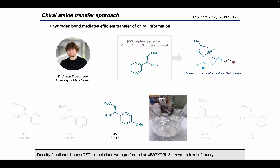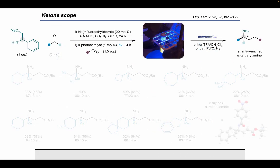Here you can see the formation of a borane reducing agent from sodium borohydride and iodine, used in the synthesis of the para-methoxy derivative. Having selected methoxy phenylglycinol as our chiral amine transfer reagent, we explored the scope of our two-step, one-pot reaction. After condensation to form the required ketimine, photocatalyst and alkene were added and the reaction irradiated with blue light — the bright yellow glow you can see in the images is from the fluorescing photocatalyst.